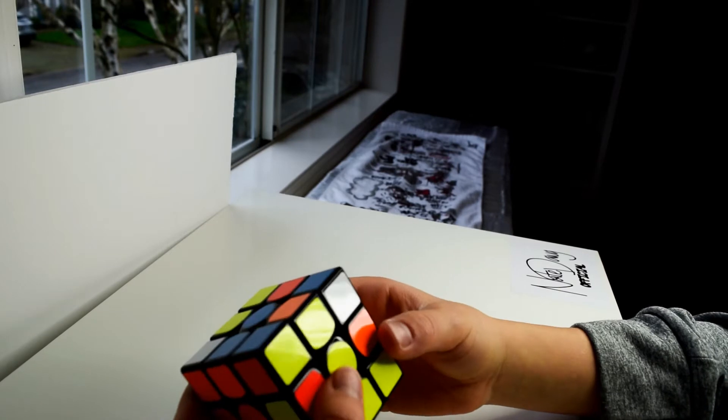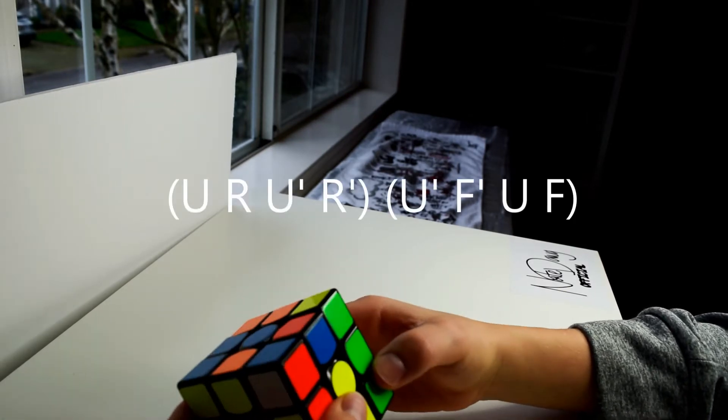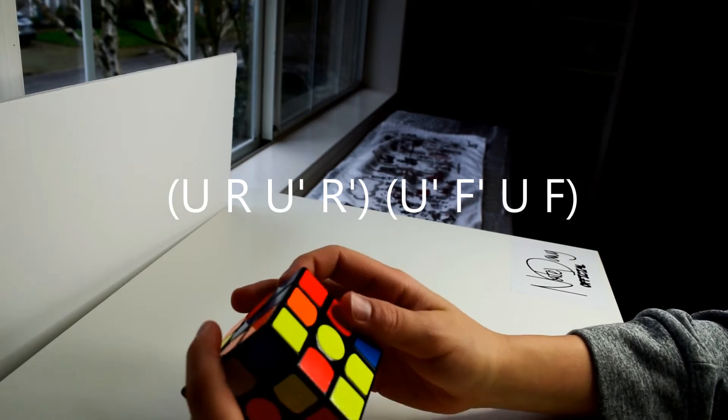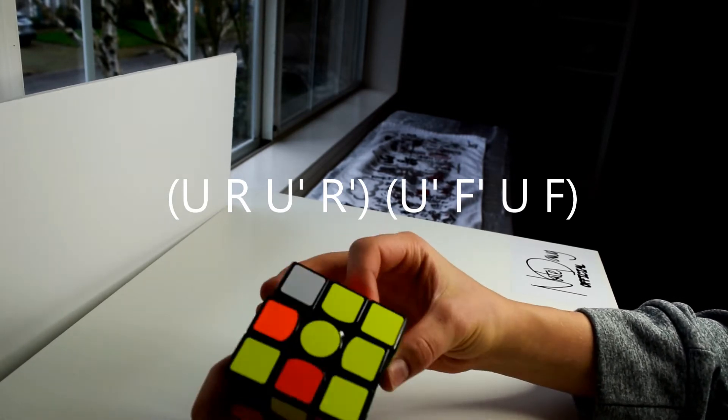So for the right is: U, R, U inverted, R inverted, U inverted, F inverted, U, F.